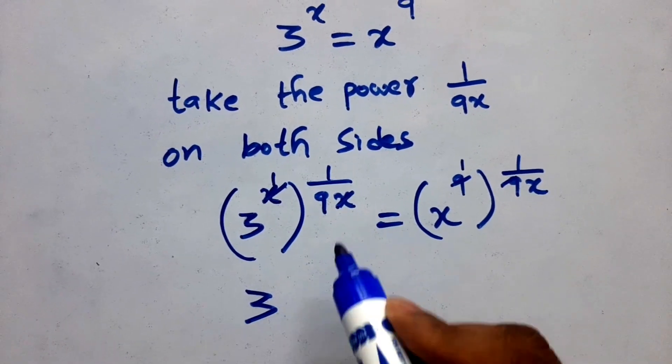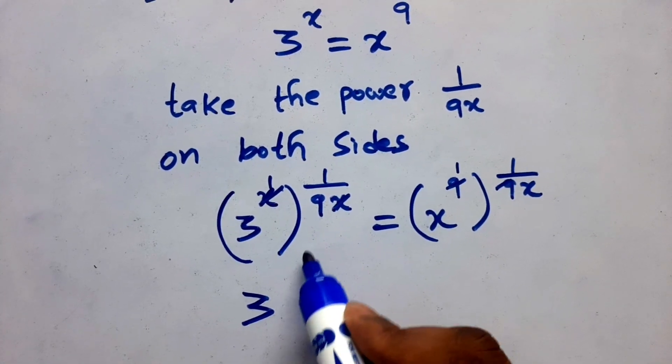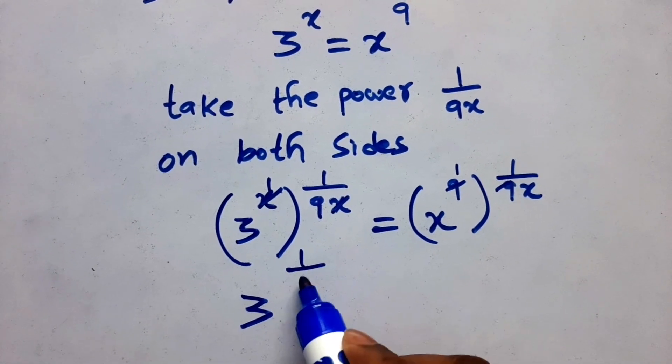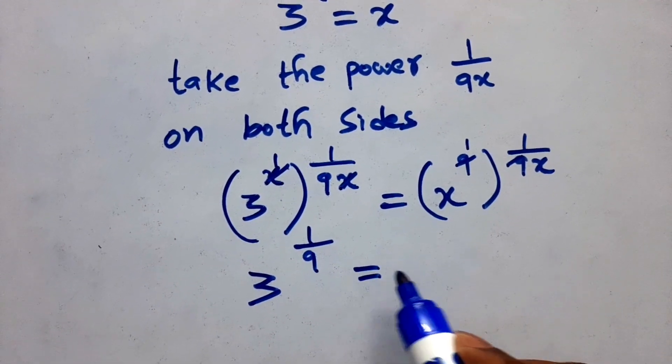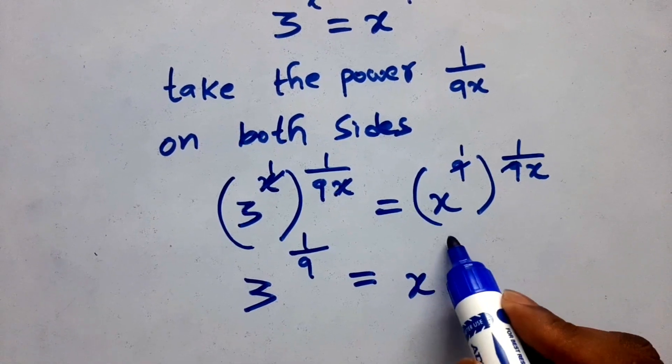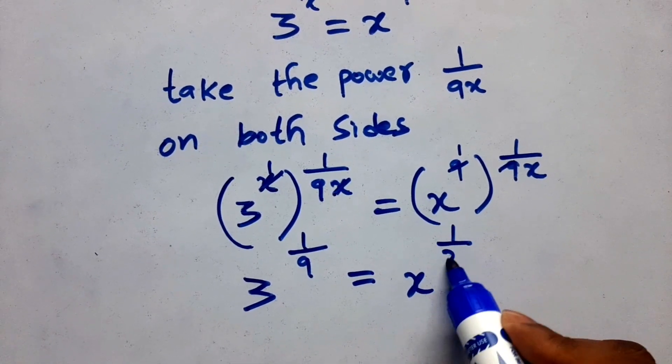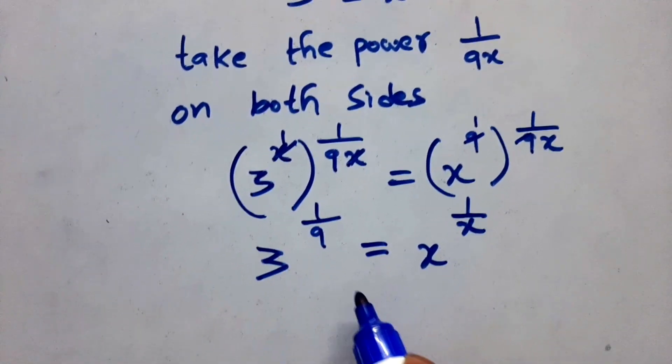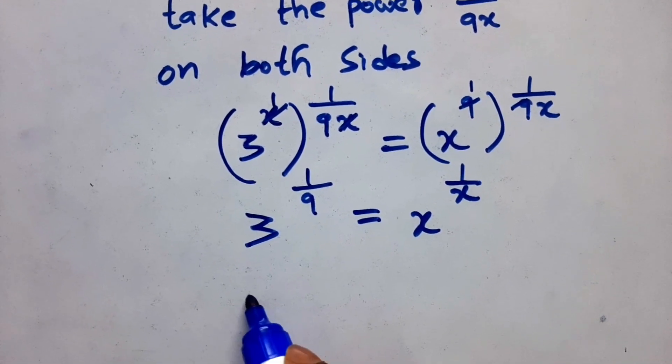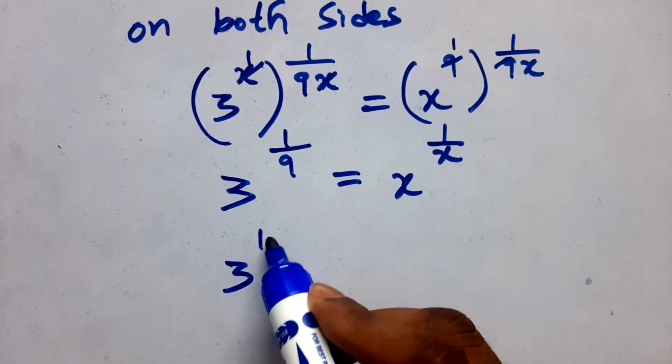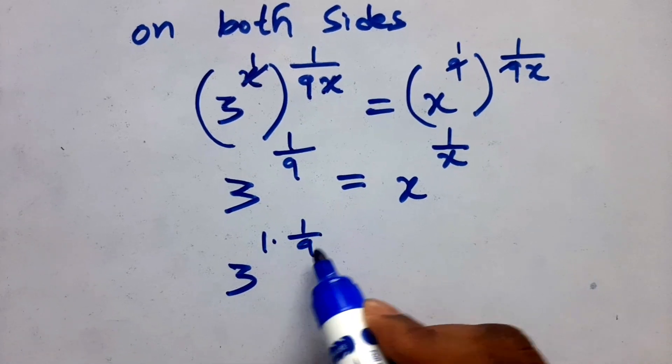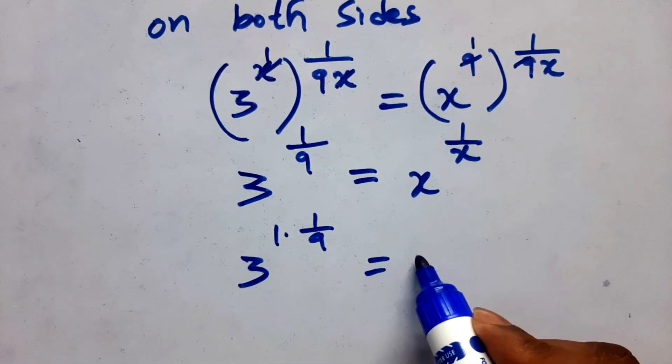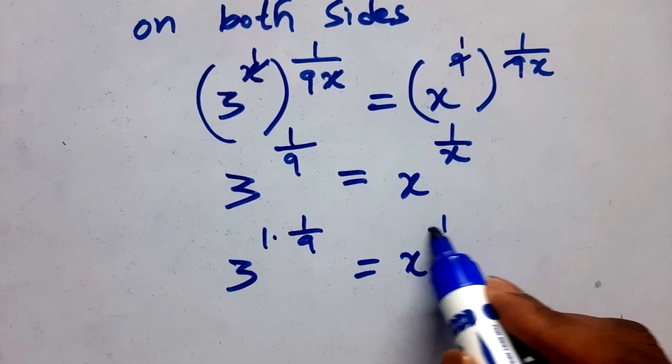Next we get these values: 3 to the power 1 by 9 is equal to x to the power 1 by x. It can be written as 3 to the power 1 times 1 by 9 is equal to x to the power 1 by x.